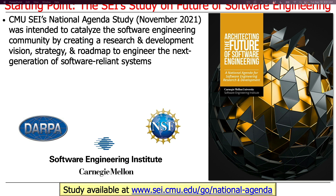In November of 2021, we released a study designed to show how the future of software engineering would be conducted — the types of research and development needed to build the next generation of software-reliant systems. It should come as no surprise that software is eating the world, as Marc Andreessen likes to say. More and more things we deal with are software-enabled; even the hardware we develop and use is built by software modeling tools.